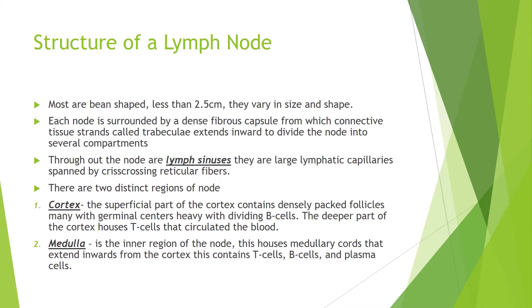There are two distinct regions of the node: the cortex and the medulla. The superficial part of the cortex contains densely packed follicles, mainly with germinal centers heavy with dividing B cells. The deeper part of the cortex houses T cells that circulate in the blood. The medulla is the inner region of the node and houses medullary cords that extend inward from the cortex, which contain T cells, B cells, and plasma cells.